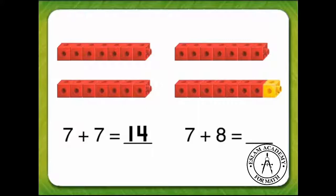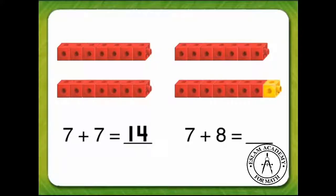I hope you said 14 because 7 plus 7 equals 14. Now let's add one linking cube to our doubles pattern and find the sum of 7 plus 8. If 7 plus 7 equals 14, then 7 plus 8 equals 15.